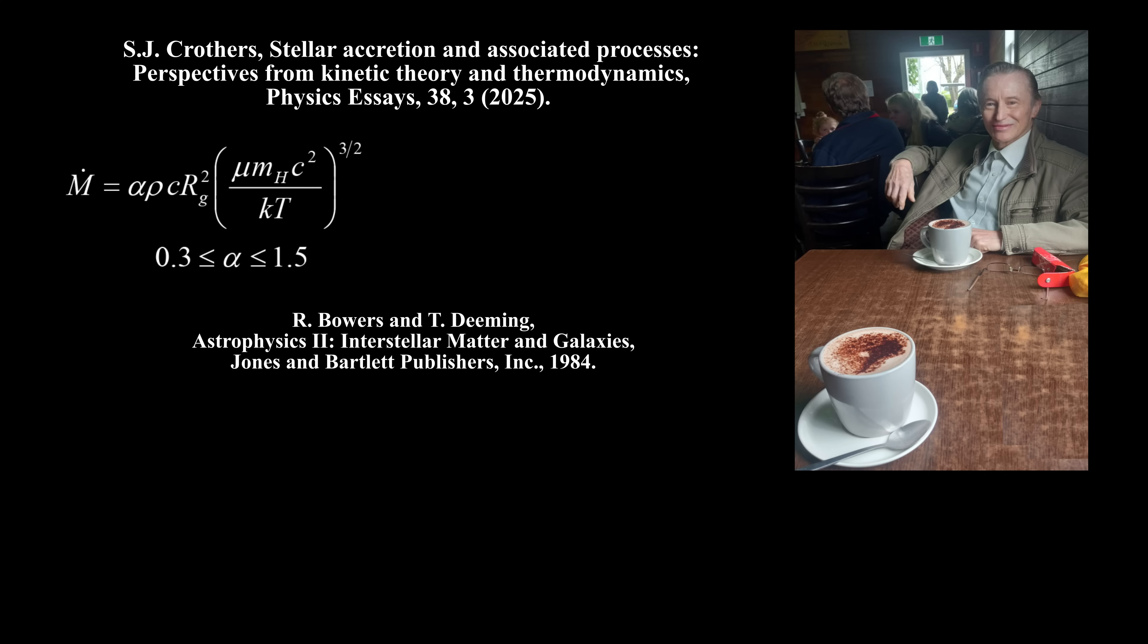For adiabatic gas inflow, these same authors assert that the accretion rate is given by this equation. Here, R sub G is the so-called Schwarzschild radius. This equation is invalid. Indeed, solving for temperature gives this equation. The left side is intensive, but the right side is homogeneous degree two-thirds, so it's invalid.